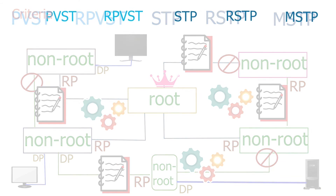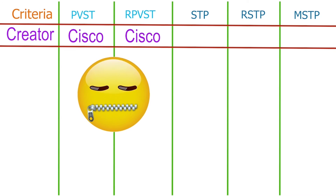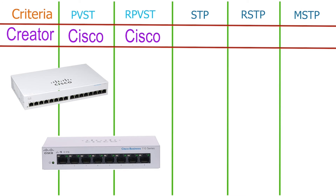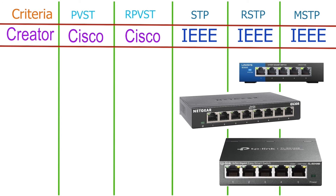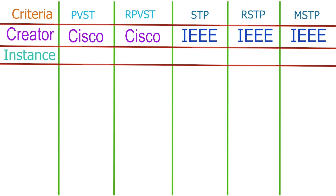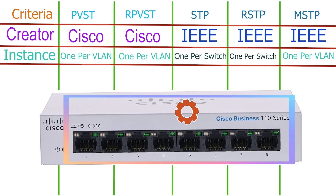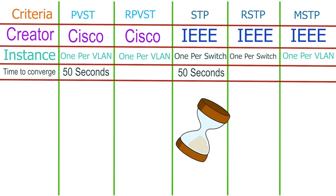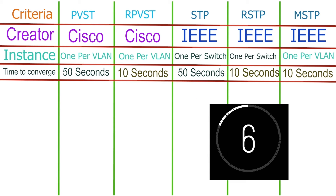Now, let us understand the differences. PVST and RPVST are Cisco proprietary protocols. These protocols run only on Cisco switches. STP, RSTP, and MSTP are open standard protocols. These protocols run on all vendor switches. PVST, RPVST, and MSTP run one instance per VLAN. STP and RSTP run one instance per switch. STP and PVST reach convergence in 50 seconds. RSTP, RPVST, and MSTP reach convergence in 10 seconds.